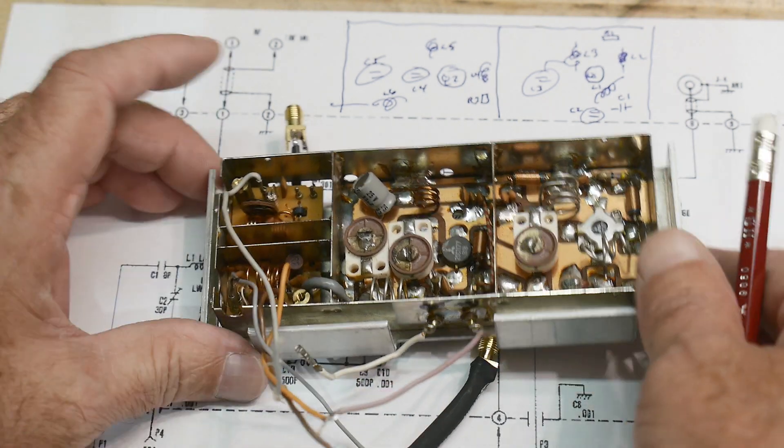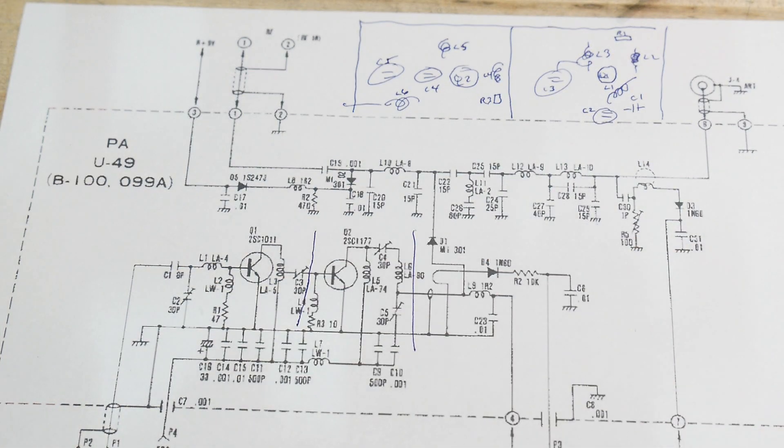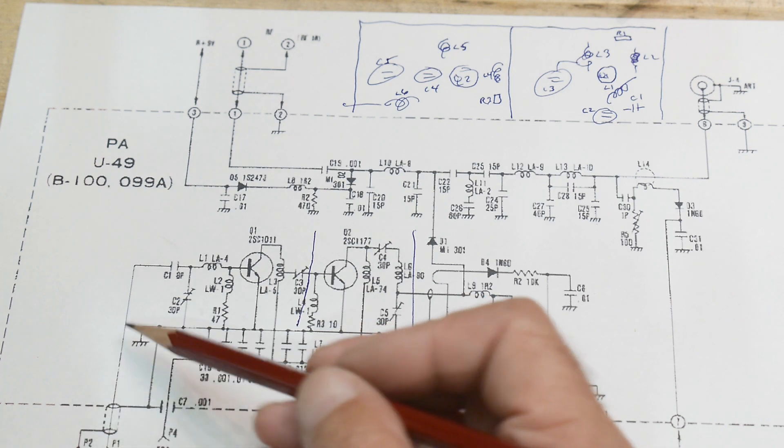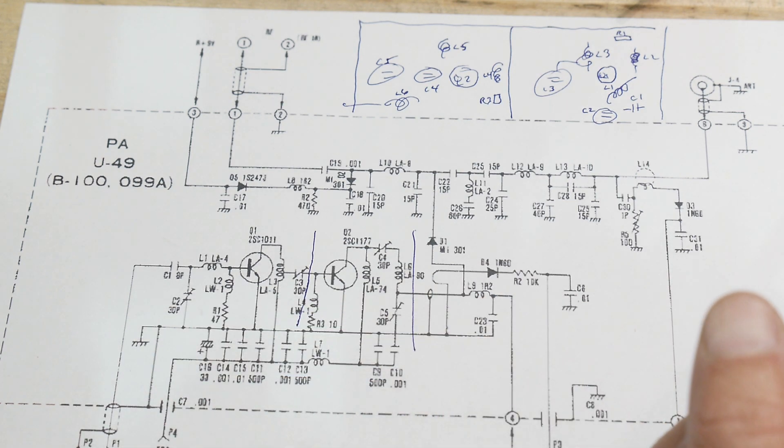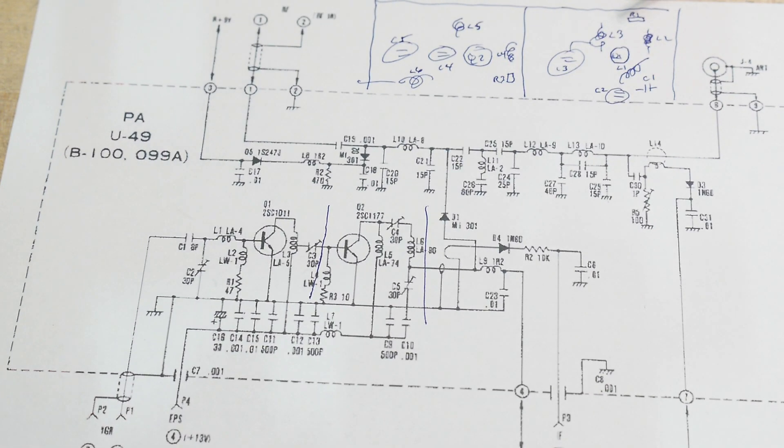All we need to do is hook it up to a power supply and transmit into it. Now, I'm assuming the gain of this stage is pretty low, and I might need to have a little bit more power coming into this thing than I normally have available, but I should be able to find something to do that with.